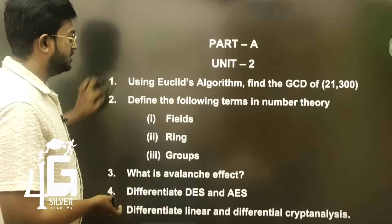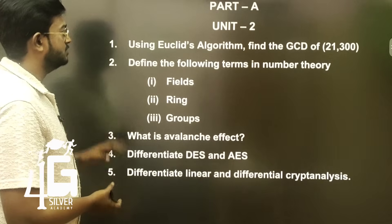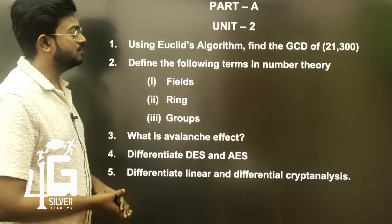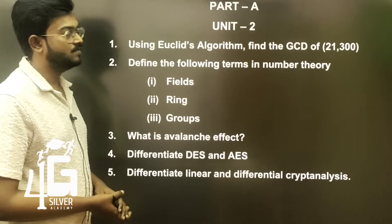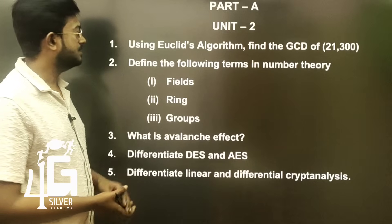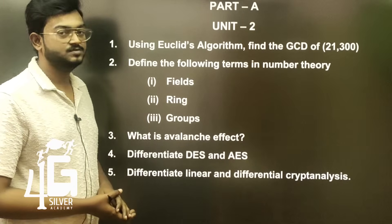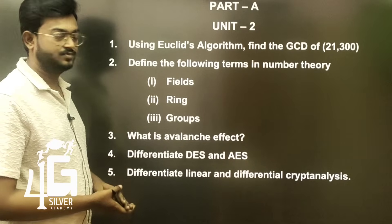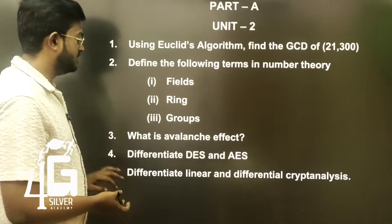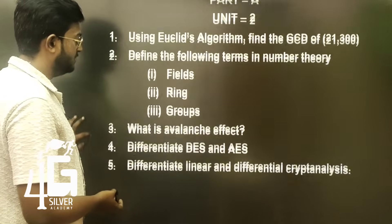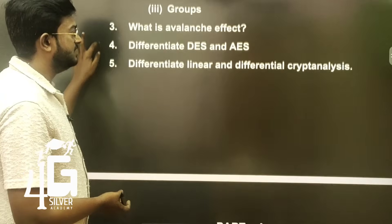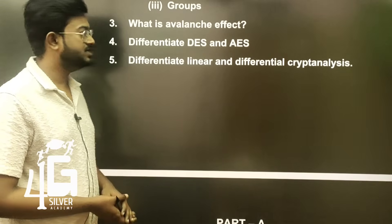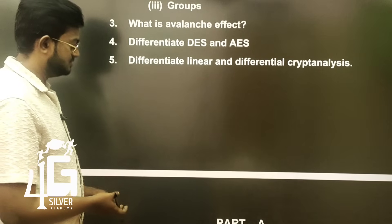Part A, Unit 2 important questions: Using Euclid's algorithm, find the GCD of 21 and 300. Define the following terms in number theory: fields, ring, groups. What is the avalanche effect? Differentiate DES and AES. Differentiate linear and differential cryptanalysis.